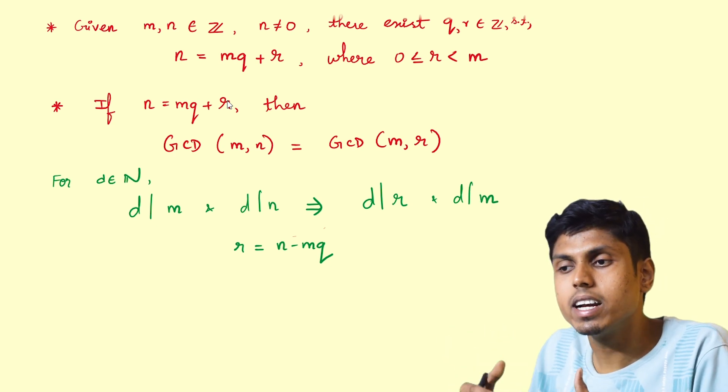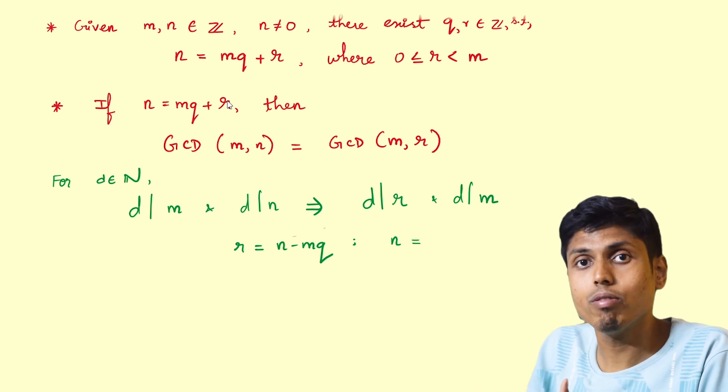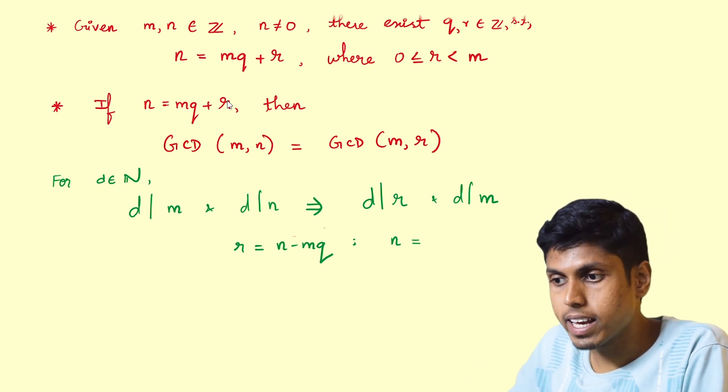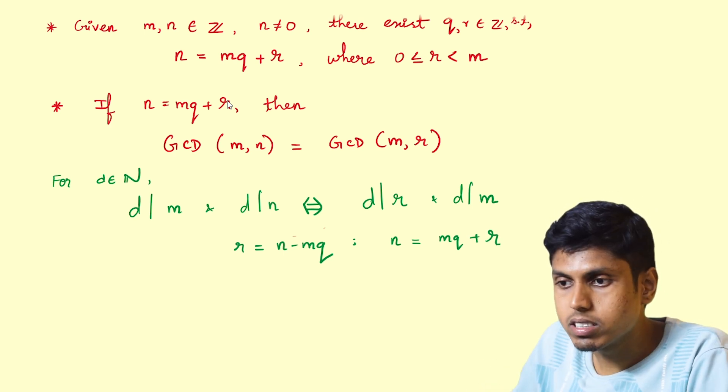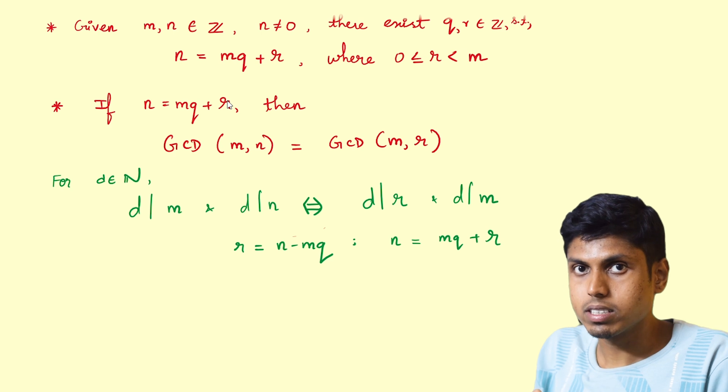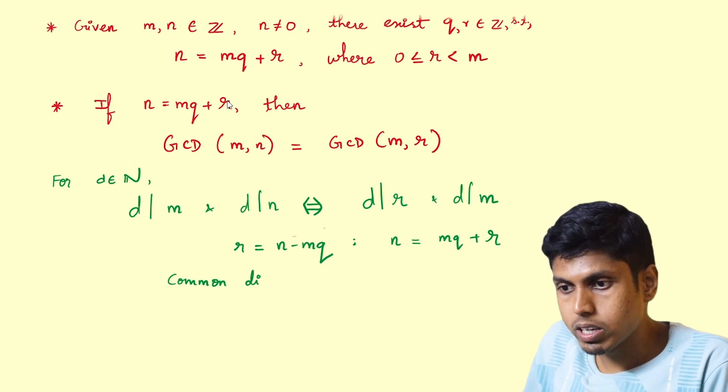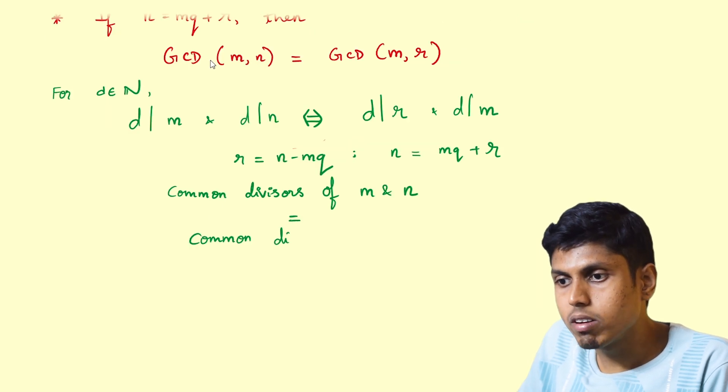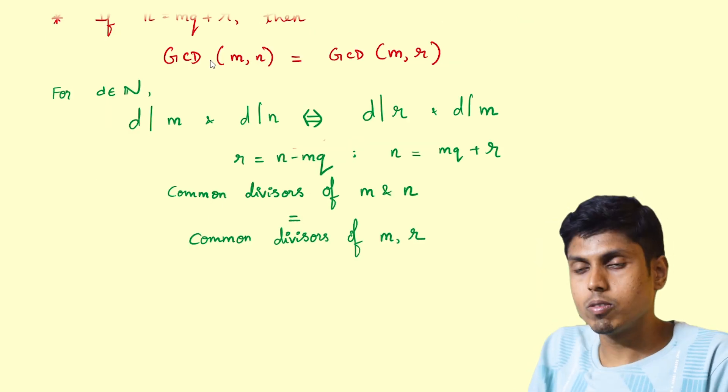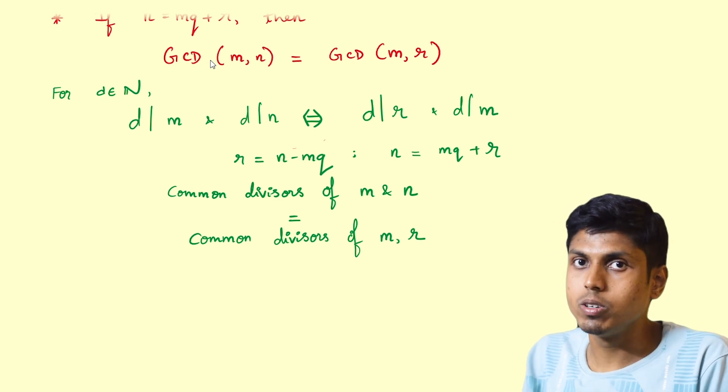If d divides r and d divides m, then clearly d is a divisor of n, because n can be written as mq plus r, and one can take d common out of m and r. So hence this statement is equivalent, and thus it can be rephrased as the set of all common divisors of m and n equal common divisors of m and r.